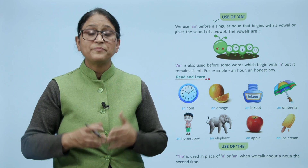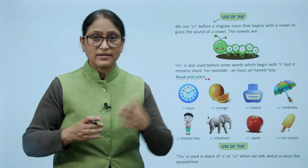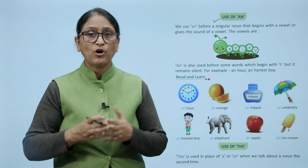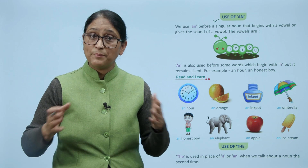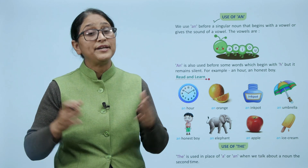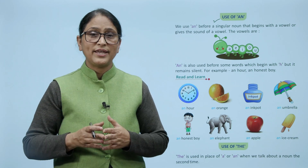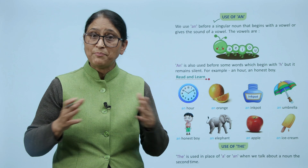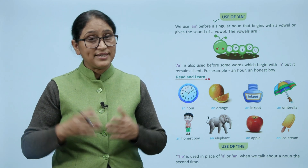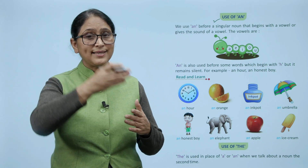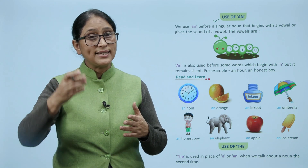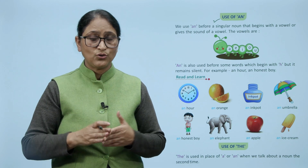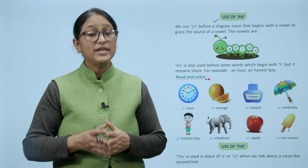So read and learn. An hour, an orange, an ink pot, an umbrella, an honest boy, an elephant, an apple, an ice cream. Ye sare jho letters te, inhone vowel ka sound diya. Toh hum ne an use kara.